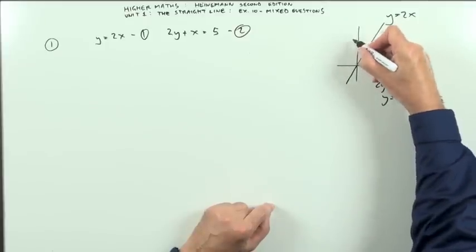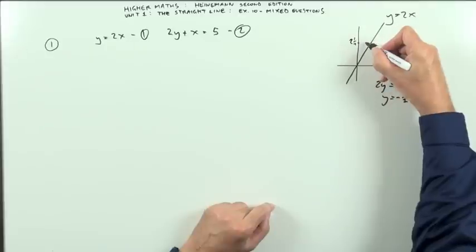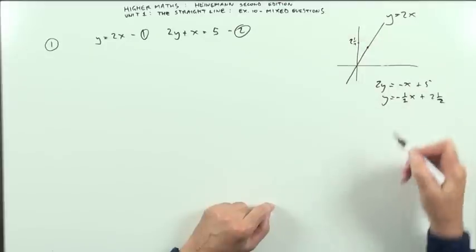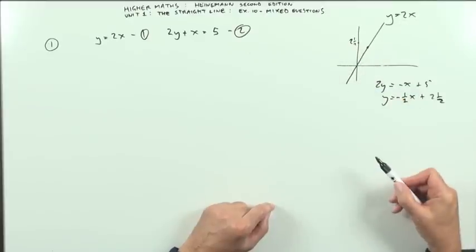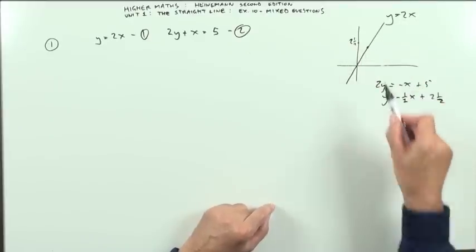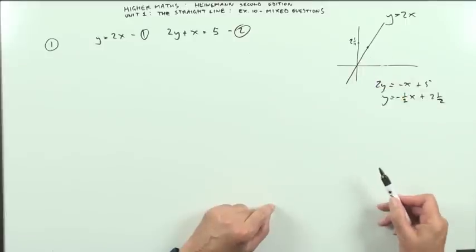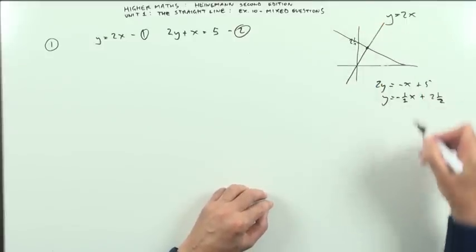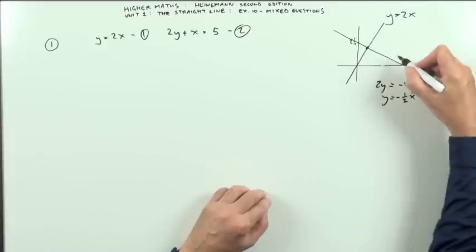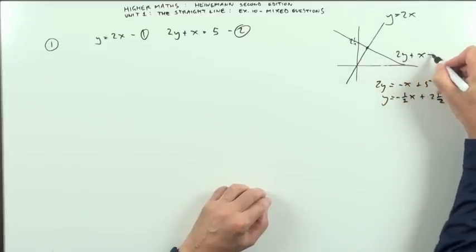So we'd start at 2 and a half and one step along we'd drop down a half. Well actually that must make it level with 2 which is 1 along 2 for this line here. So I'm going to see straight away that point of intersection is going to be 1, 2. Anyway this line goes down like this. So the point of intersection should be there.